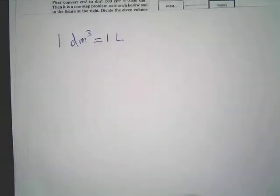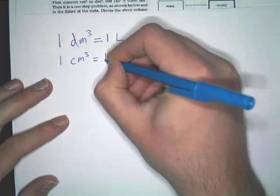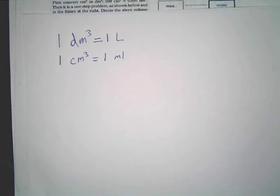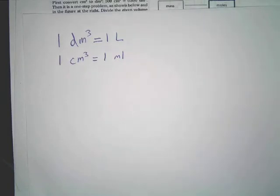So if we know one cubic decimeter is equal to one liter, one cubic centimeter is equal to one milliliter. This is the more important conversion. So how many cubic centimeters are in one cubic decimeter? Does anybody remember that conversion? How many of these can make up one of these? It's a thousand.